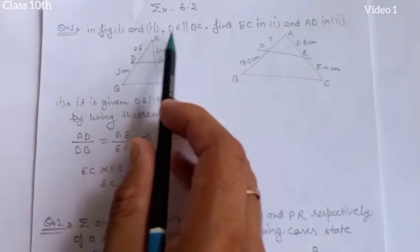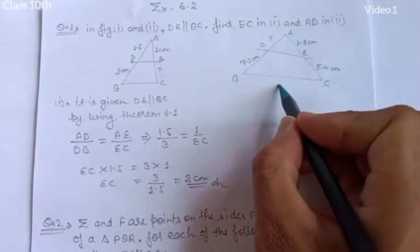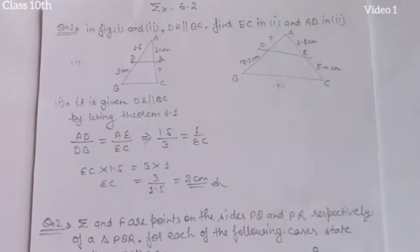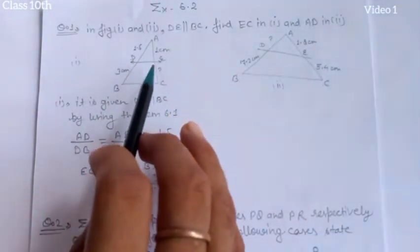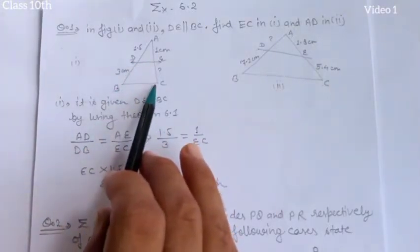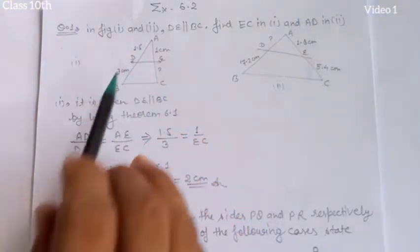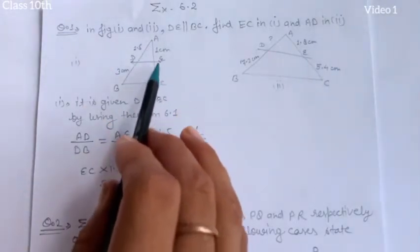In figures 1 and 2, DE is parallel to BC. Find EC in figure 1 and AD in figure 2. Before we start to solve, we have to check what things are given and what helps in the solution. It is given that DE is parallel to BC. By theorem 6.1, if a line is parallel to one side of a triangle, it divides the other two sides in equal ratio. So AD upon DB is equal to AE upon EC, and with this we can find EC.